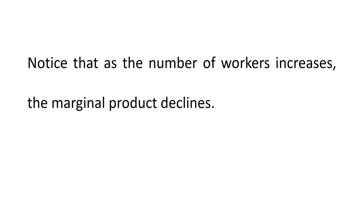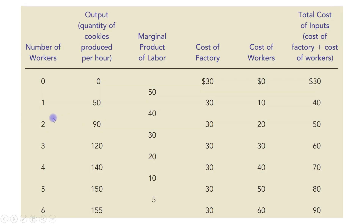Notice that as the number of workers increases, the marginal product declines. As the number of workers increases from 0, 1, 2, 3, 4, 5, 6, the marginal product of labor is continuously declining: 50, 40, 30, 20, 10, 5.